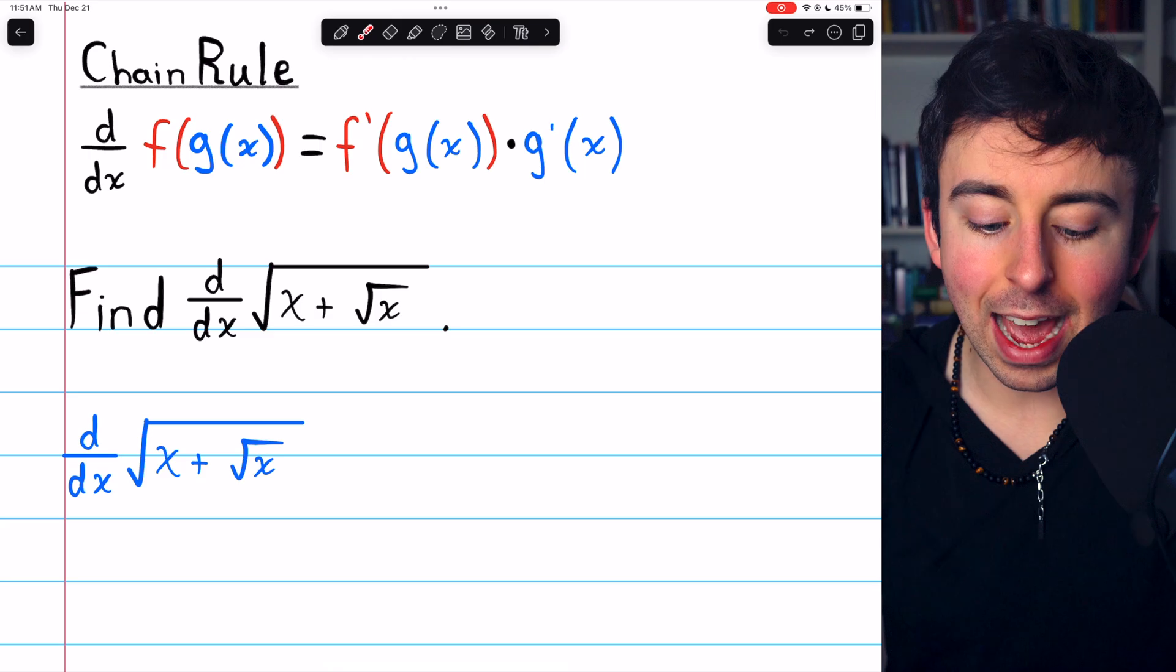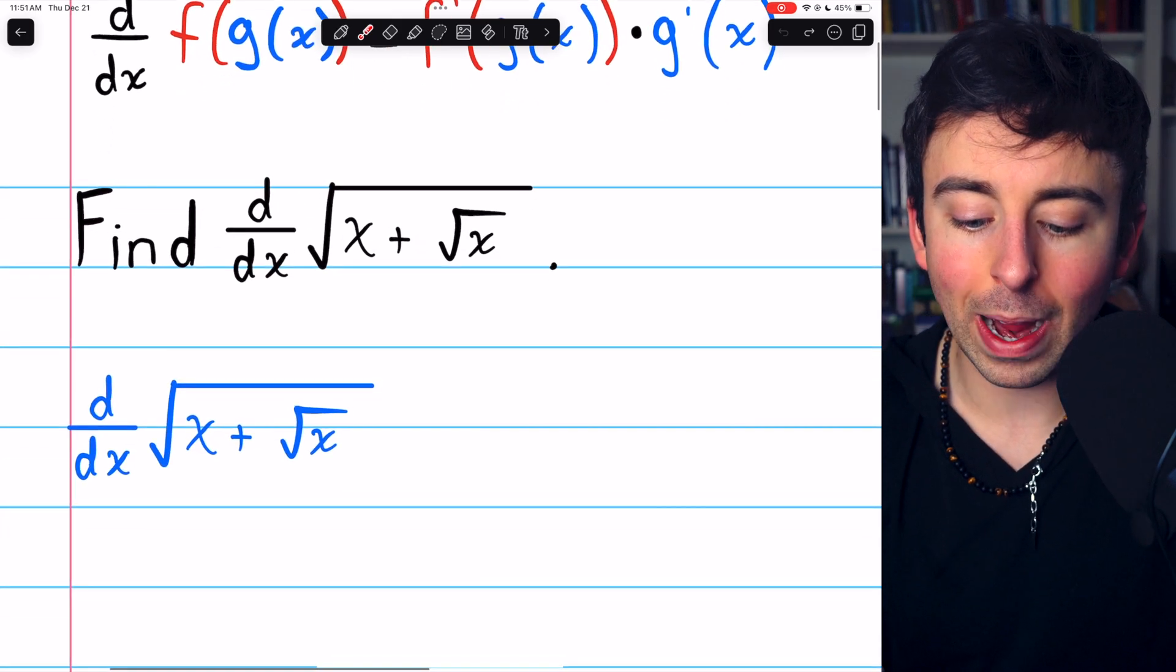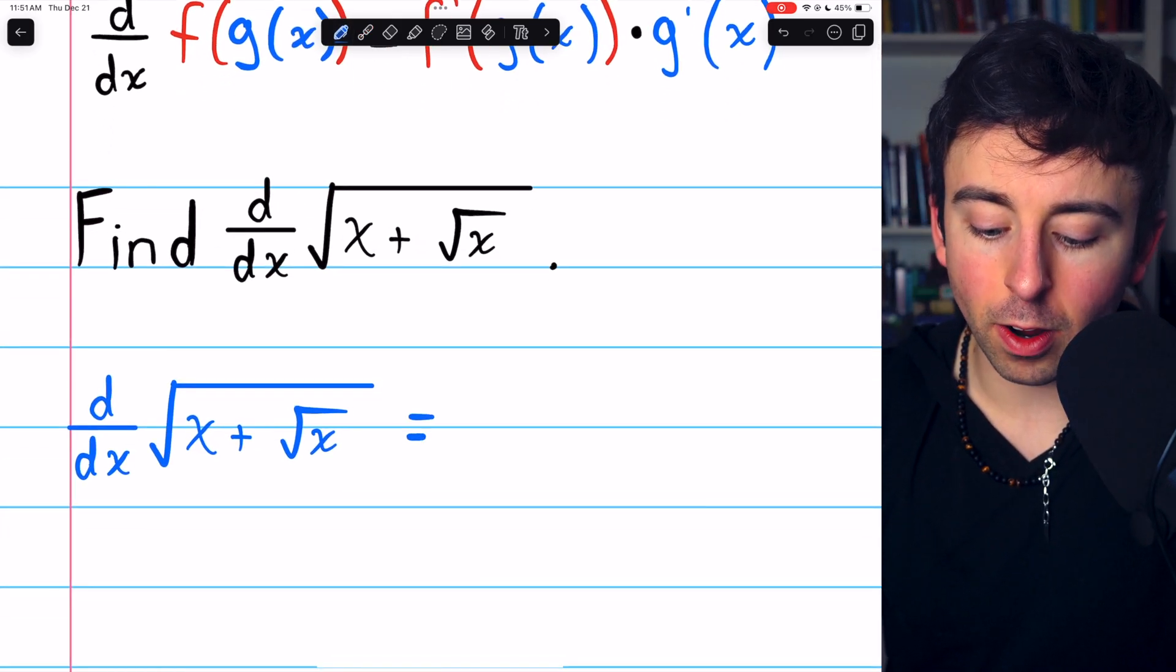In our case, the outermost function is the square root. So let's start on this derivative.